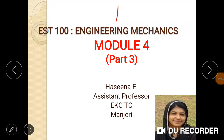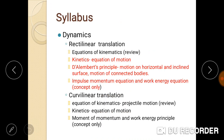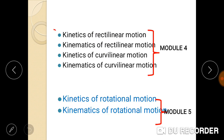Hello dear students, here we are studying Module 4 from Engineering Mechanics, that is dynamics of rectilinear translation and curvilinear translation. We already know dynamics has two branches: kinetics and kinematics. So we need to study kinetics and kinematics of rectilinear translation and kinematics of curvilinear translation. We can divide this fourth module into mainly four parts: kinetics of rectilinear motion, kinematics of rectilinear motion, kinetics of curvilinear motion, and kinematics of curvilinear motion.